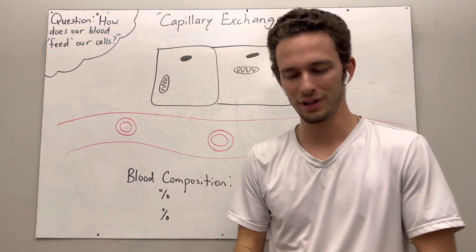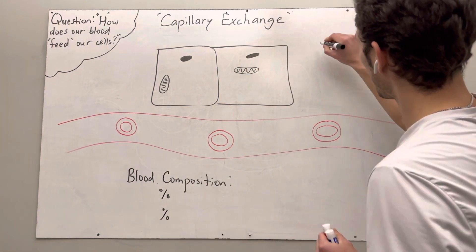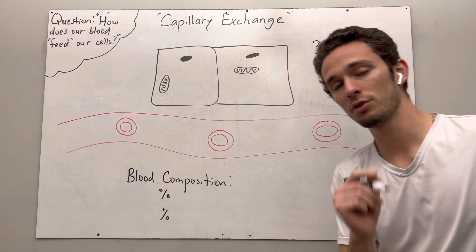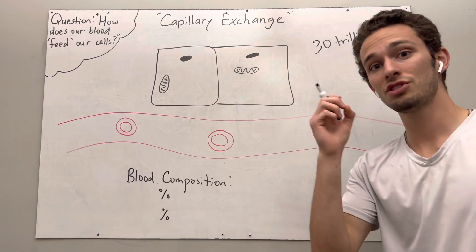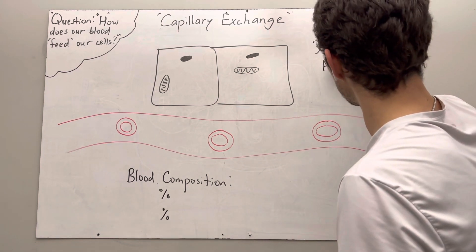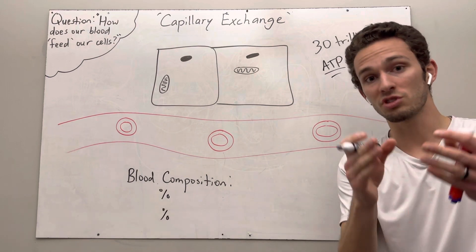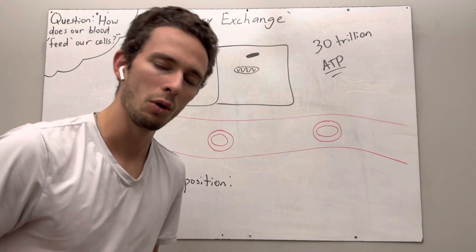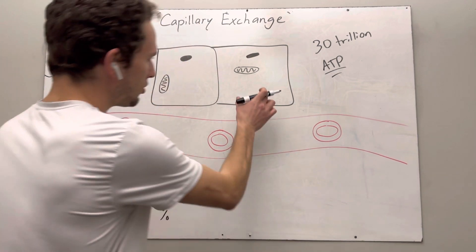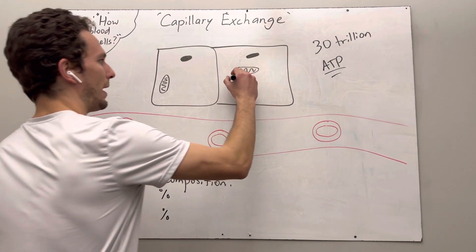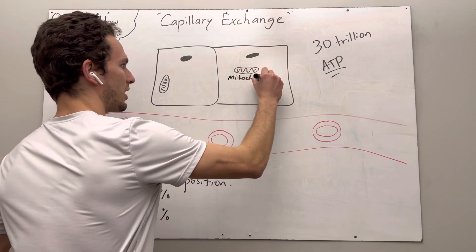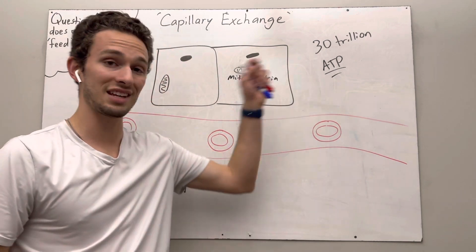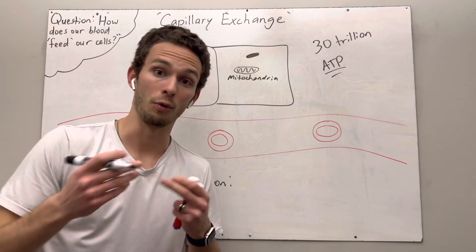So let's set this up. You have approximately 30 trillion cells in your body. Every single one of those cells basically needs to make what's called ATP. In order for those cells to stay alive, you must be producing this molecule ATP. Well, how do we make that? In your cells we have what's called mitochondria in most cell types.